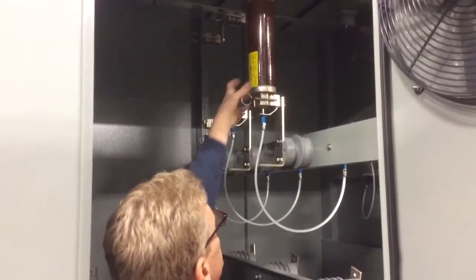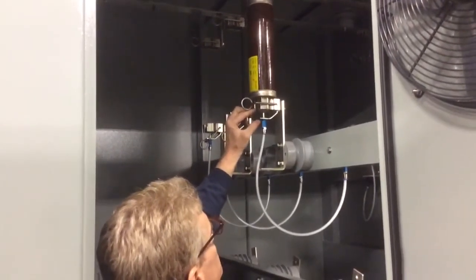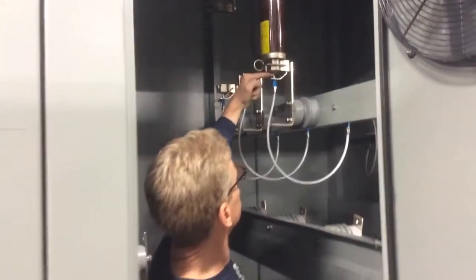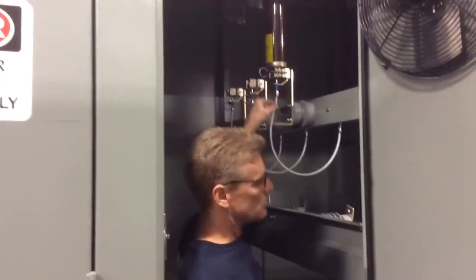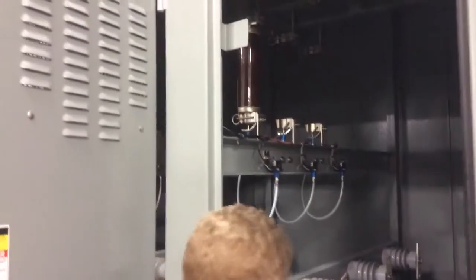There's a red anodized aluminum plunger that will pop out of the fuse and depress this actuator. We'll go to the other side and show you what happens over here.